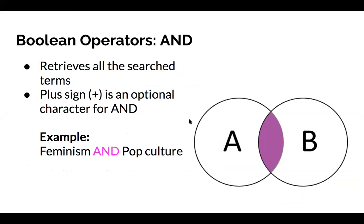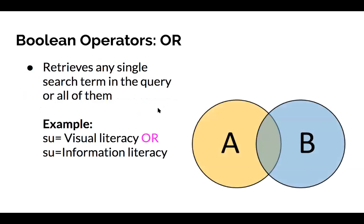The first operator, AND, returns items containing all the terms in the query. For example, searching for 'feminism AND pop culture' will bring back items pertaining to both topics. The plus sign symbol can also serve as an optional character that can be used in place of AND.